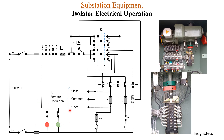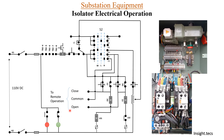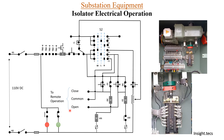This is the basic operation of CC and OC — how the contacts are operated, how DC supply reaches the contactor, and how the electrical operation of the isolator is done locally.